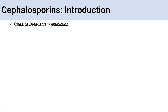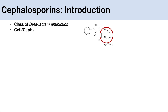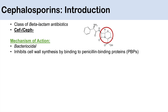Cephalosporins are a class of beta-lactam antibiotics — beta-lactam because they have a beta-lactam ring. All cephalosporin antibiotic names start with the prefix 'cef' or 'ceph' (C-E-F or C-E-P-H), which is how you identify them. Their mechanism of action is similar to other beta-lactam antibiotics: they are bactericidal through their ability to inhibit cell wall synthesis by binding to penicillin-binding proteins on bacteria.